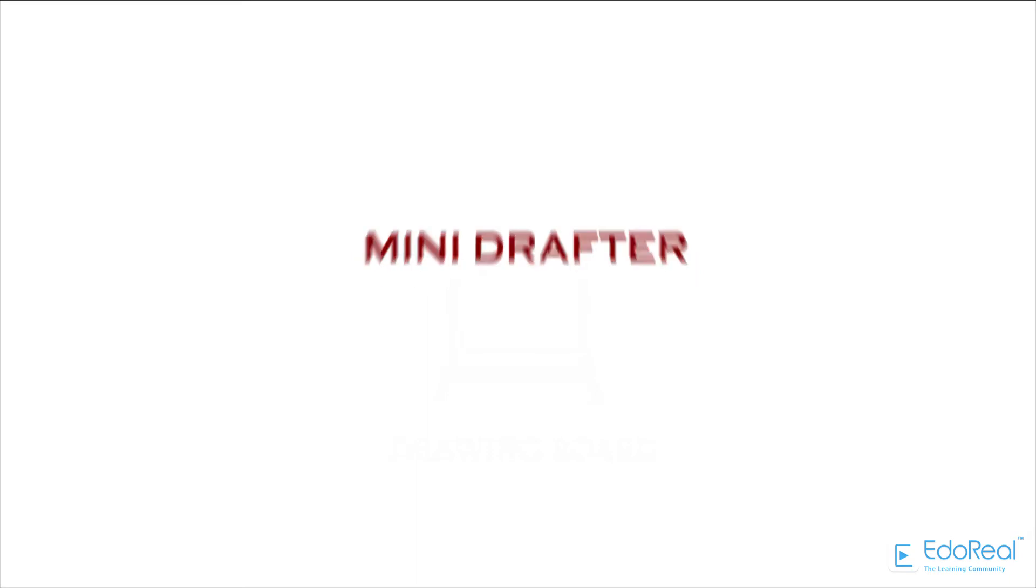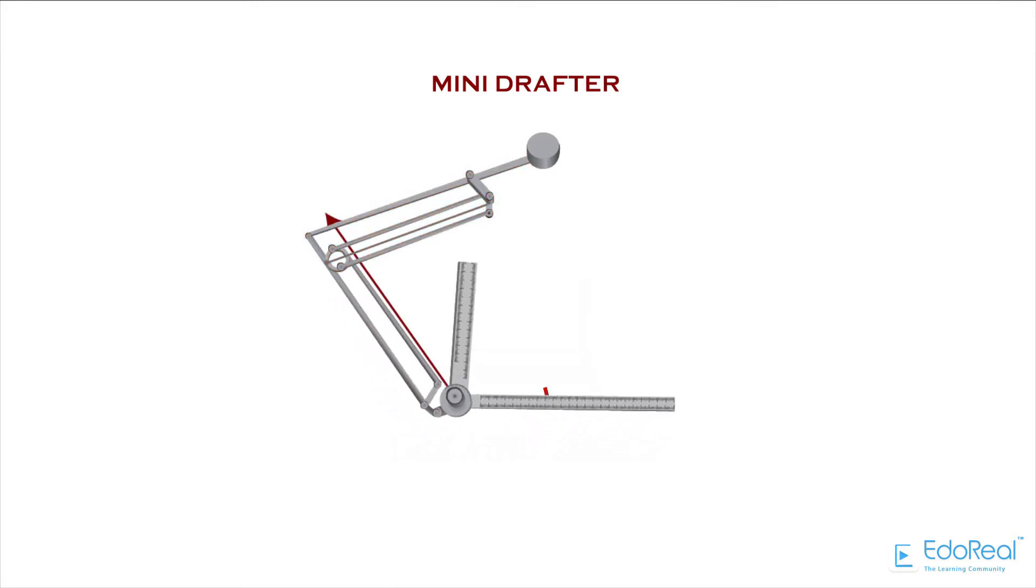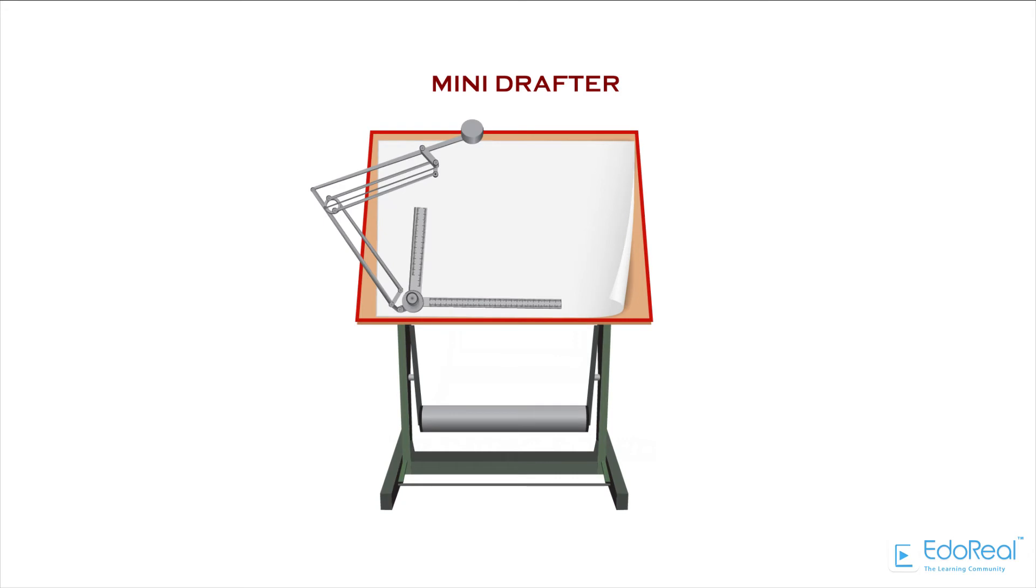Mini drafter is an instrument used for multiple functions in drawing. It contains two arms which are adjustable to required angle, and at the end of the lower arm, a scale set is attached. This instrument is fixed to the drawing board at one edge with the help of screw provided for the drafter.